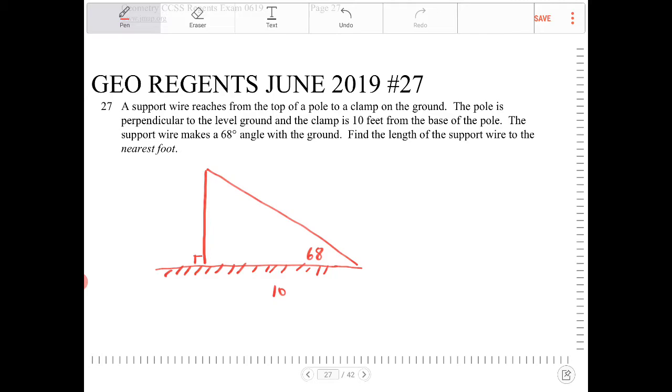The only pieces of information that we need to figure out all the other information in the right triangle is we have to have at minimum two sides or one side and an angle. And then we can figure out everything else about the right triangle.